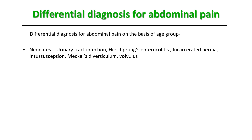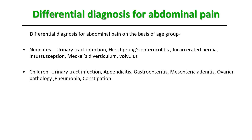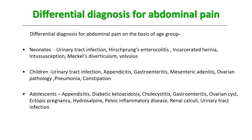Some differential diagnoses have a congenital or very early presentation, so keep them in mind when seeing very young patients with pain. In children, UTI is common; slightly older children may present with infectious etiologies such as appendicitis, gastroenteritis, mesenteric adenitis, ovarian pathology, constipation, or pneumonia. Moving to adolescents, the differential includes appendicitis, diabetic ketoacidosis, type 1 diabetes, cholecystitis, gastroenteritis, and ovarian cysts.